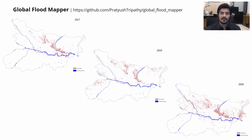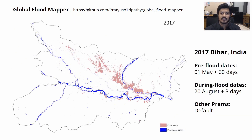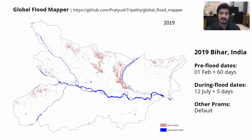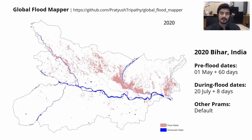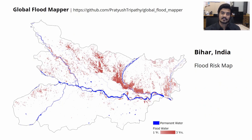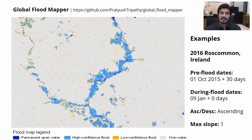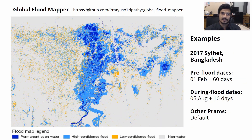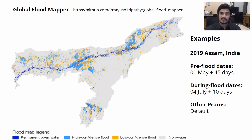We used the Global Flood Mapper to generate and download flood extent as shapefiles for the years 2017, 2019, and 2020. By simply overlaying and intersecting the three layers, we can easily identify the areas that are at high risk. The flood extent shapefiles can also be overlaid with gridded population, agriculture data, or other such layers for flood risk assessment.